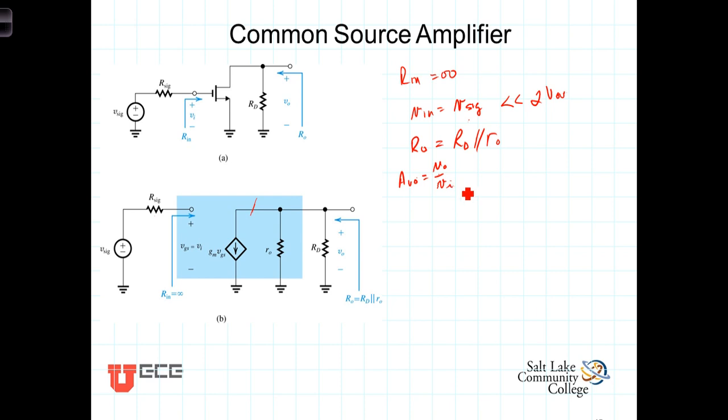By looking here and realizing that Vgs is just the input voltage, which is the signal voltage, we have then that Vout is equal to negative GM Vn times the parallel combination of R0 and R sub D. Vout is this current flowing in this direction, thus the negative sign, so there is an inversion in sign in this amplifier, times the parallel combination of those two resistors.